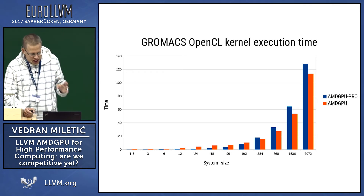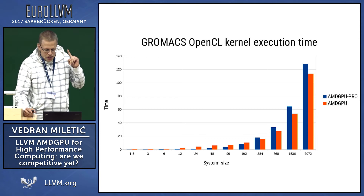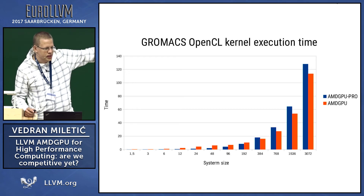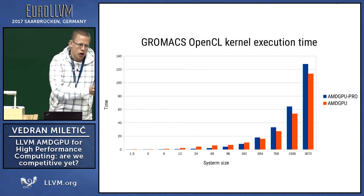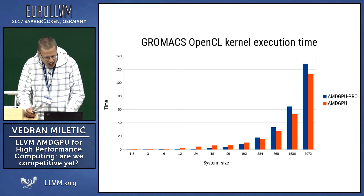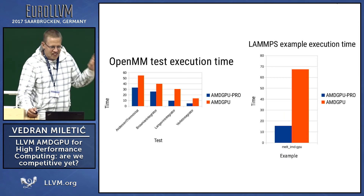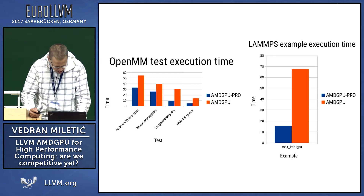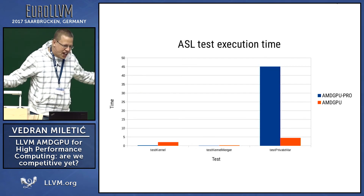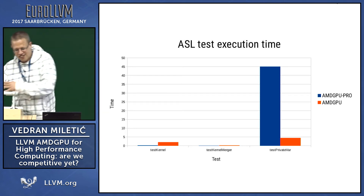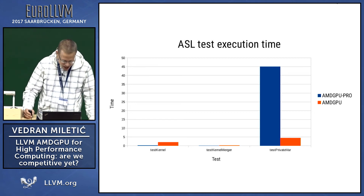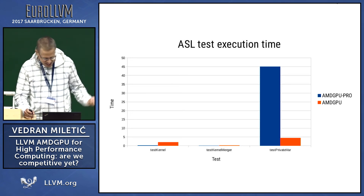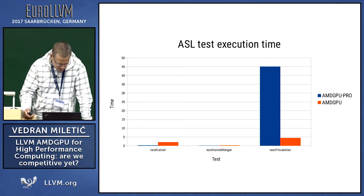The results are actually quite promising. In GROMACS, in terms of kernel execution time, the open source driver is beating the proprietary driver if the number of kernel launches is small enough. With large systems, the kernel execution time is relatively big compared to the kernel launch time, and there we are actually beating the proprietary driver. Unfortunately, the same doesn't hold for OpenMM and LAMMPS, where we are behind the proprietary driver in LAMMPS by four times. However, in ASL, we are actually beating AMD by 10 times. So, the results are kind of all over the scale.